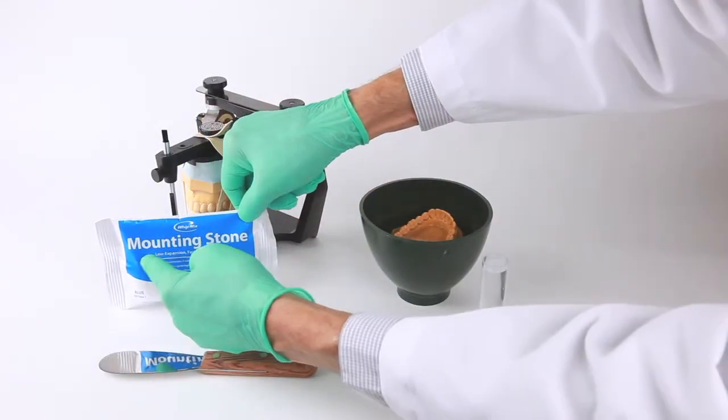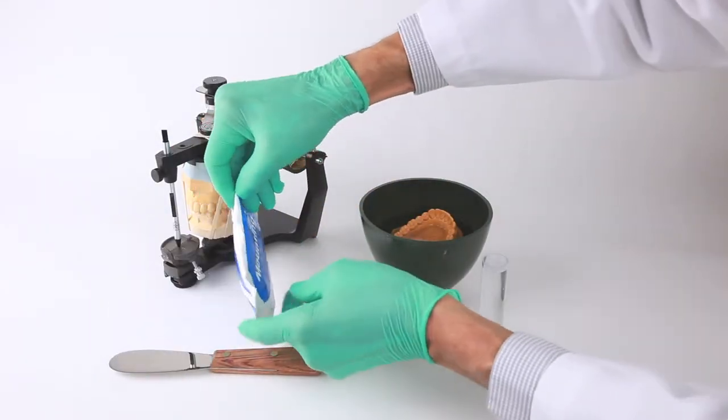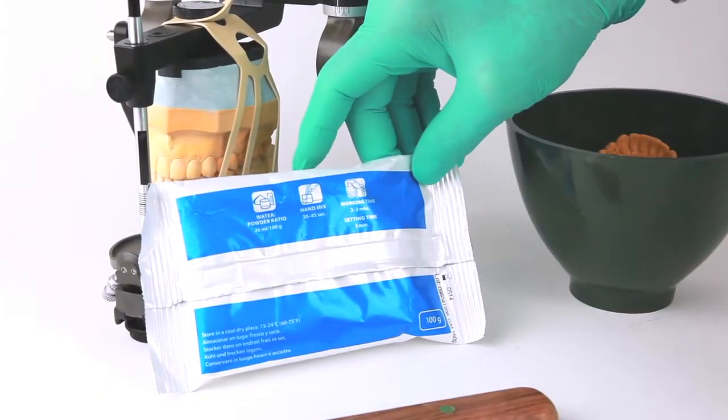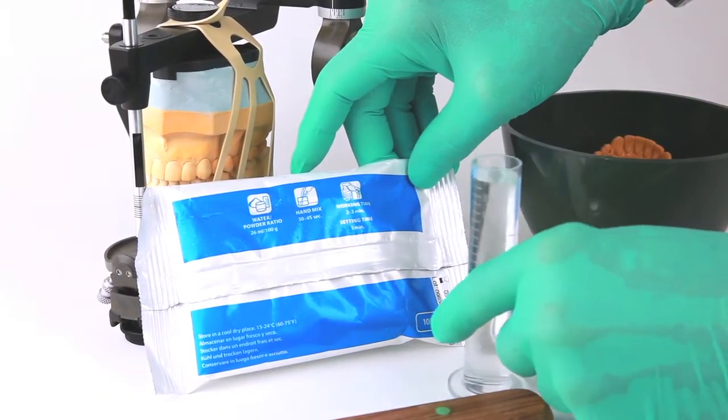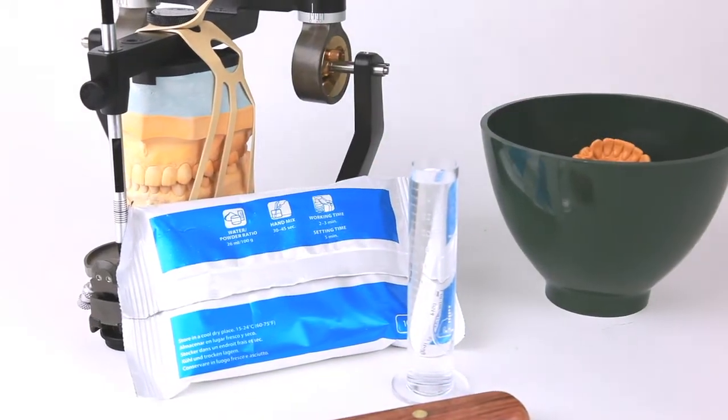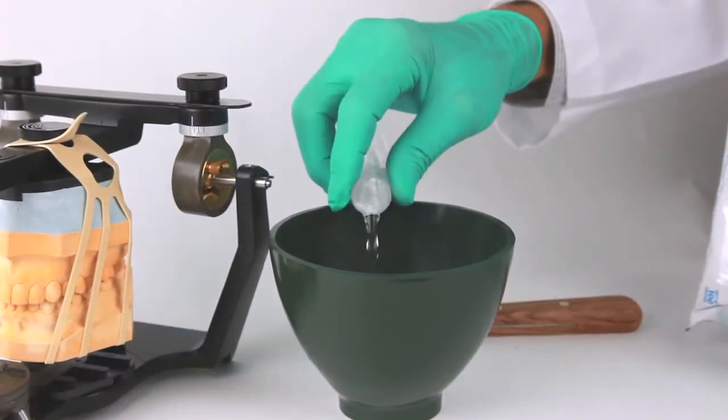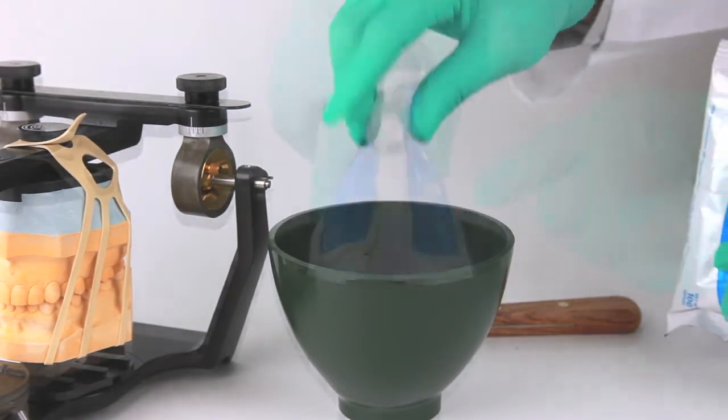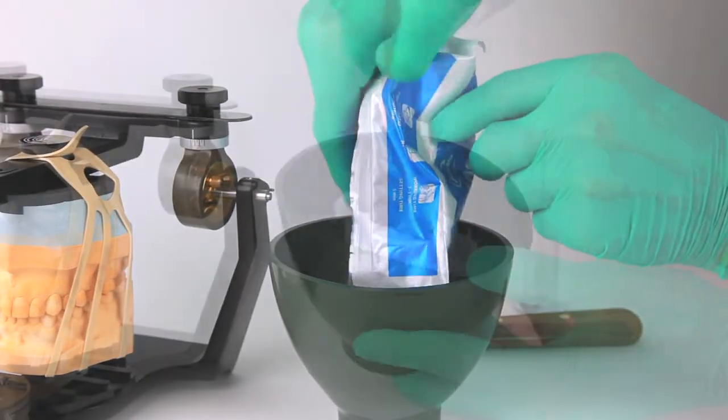At this time, we are now ready to mix the mounting stone or plaster, paying attention to the proper water powder proportions so that an ideal consistency and setting expansion can be obtained. This is accomplished by placing the water in the mixing bowl first and then adding powder to it, mixing to a smooth creamy consistency.